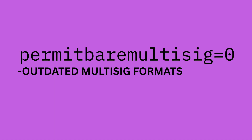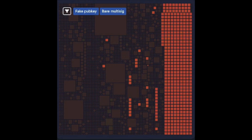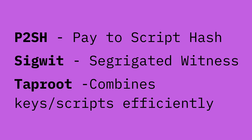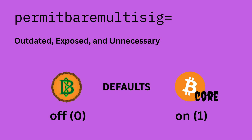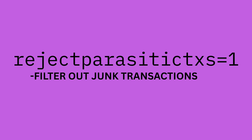Bare multi-sig is the original way Bitcoin handled multi-signature transactions. Instead of using addresses like we do today, the full script — like 'two of three keys must sign' — and all the public keys were included directly in the transaction. It worked, but it made transactions bulky and exposed details about how your coins were secured. Today we use better formats like P2SH, SegWit, and Taproot that hide that information until spend time. Bitcoin Knots disables bare multi-sig by default; Bitcoin Core allows it by default but it can be disabled manually. Unless you're dealing with very old legacy wallets, there's usually no reason to keep it on.